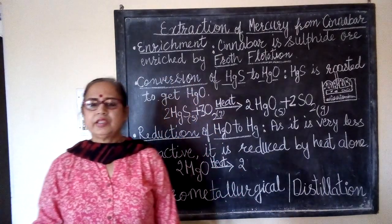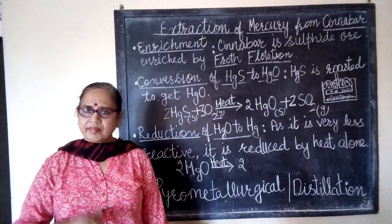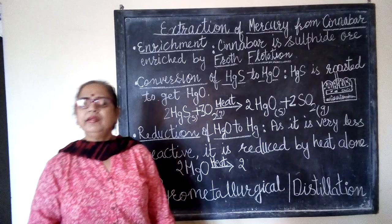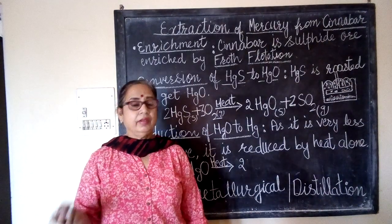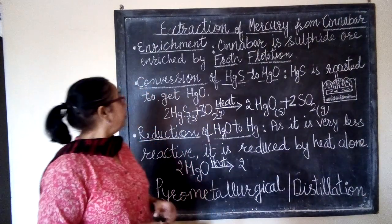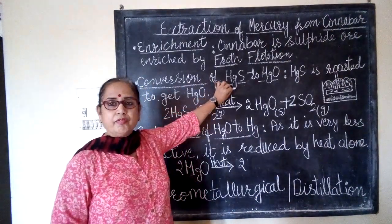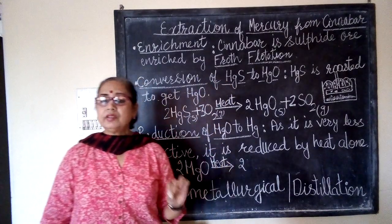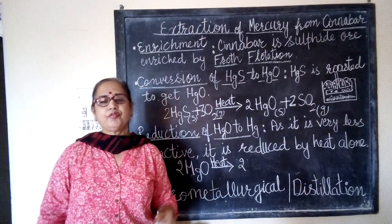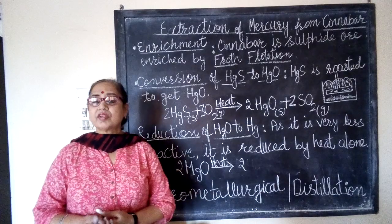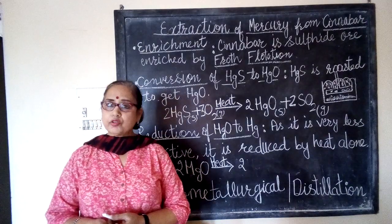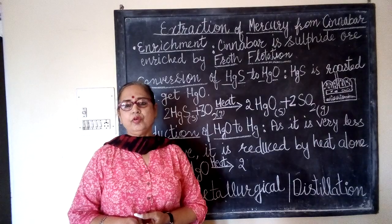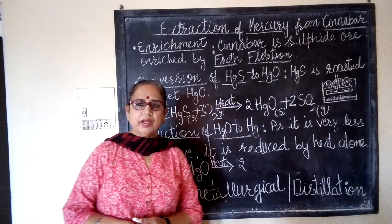After froth flotation, the gangue has settled down at the bottom and you have enriched ore which you have separated. Now, since the ore is a sulphide ore, we know that it is difficult to extract a metal directly from its sulphide. So the next step is to convert this HgS into mercury oxide.